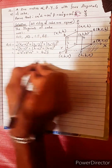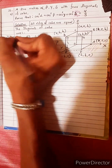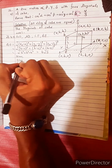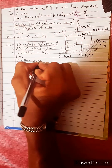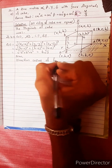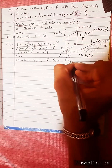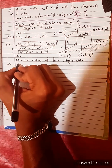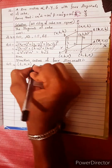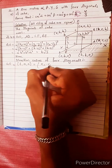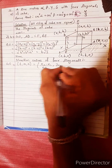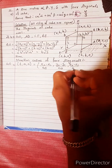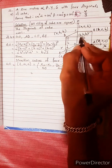Now we have to write the direction of the diagonal, which is b√3. Now we have to write the direction cosines of the four diagonals. The formula is: L, M, N equals to (x2 − x1) divided by length, (y2 − y1) divided by length, (z2 − z1) divided by length.